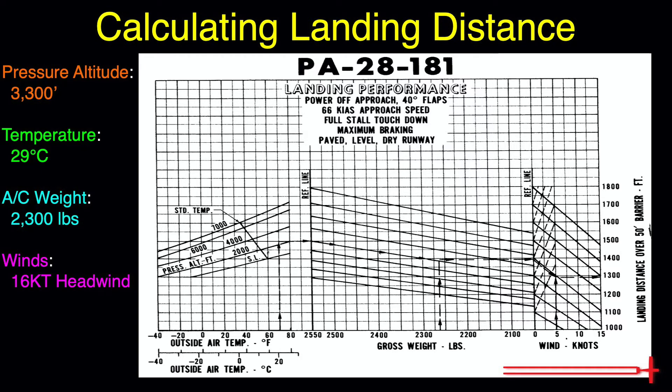Now that we've got all our data, we can make things really easy by plotting all these values on the chart. Beginning with pressure altitude, we will draw a line following the slanted lines on the left side of the chart where 3,300 feet would fall. Next, we can draw a line straight up from the other three values: our temperature of 29 degrees Celsius, our weight of 2,300 pounds, and our winds of 16 knots — which we will draw at 15 because 16 doesn't exist on this chart.